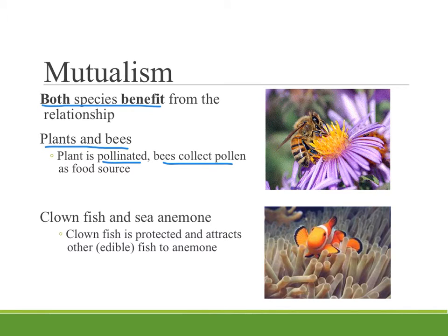If you've seen Finding Nemo, you know that clownfish and sea anemones have a mutualistic relationship. The clownfish is protected by living within the stinging tentacles of the sea anemone, and in turn it attracts other fish that unwarily come too close. Those fish may think it is a safe place because they see the clownfish, but the anemone gets something else to eat — because anemones are carnivores whose stinging tentacles capture prey.